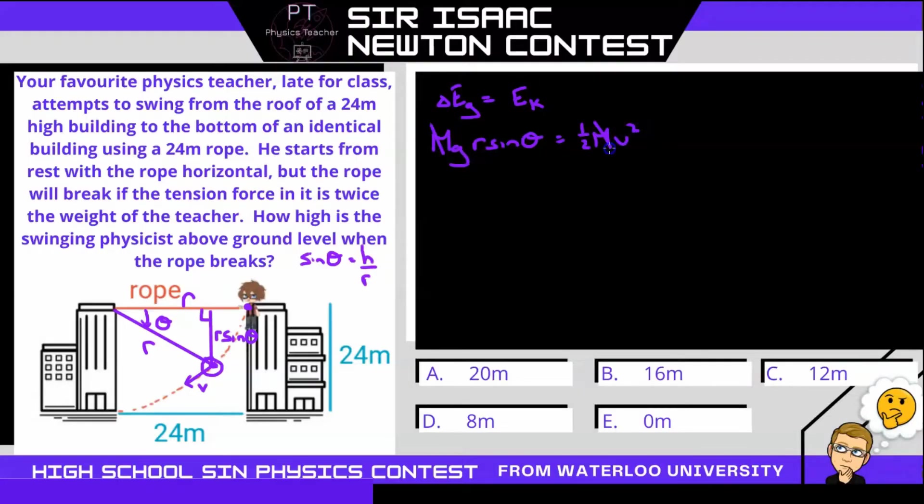So our masses will cancel. And if I rearrange this I can rearrange to get v squared over r. So I'm dividing both sides by r and then I can multiply both sides by two and that's going to give us 2g sine theta. So why did I rearrange for v squared over r? Because v squared over r is centripetal acceleration. I'm going to need that.